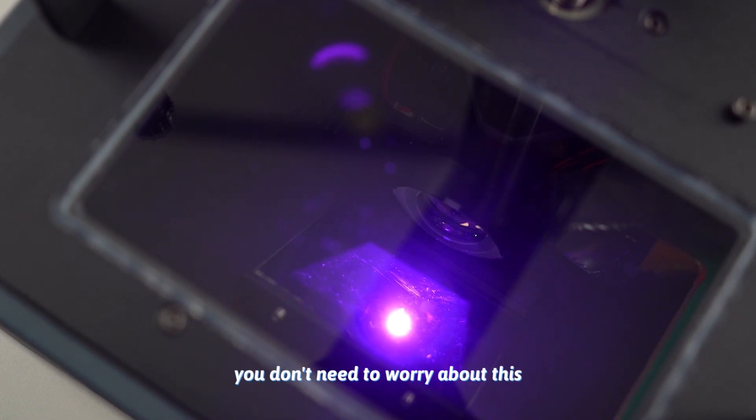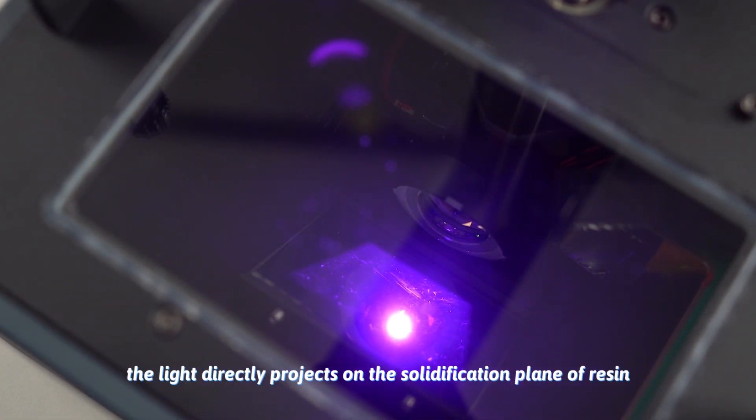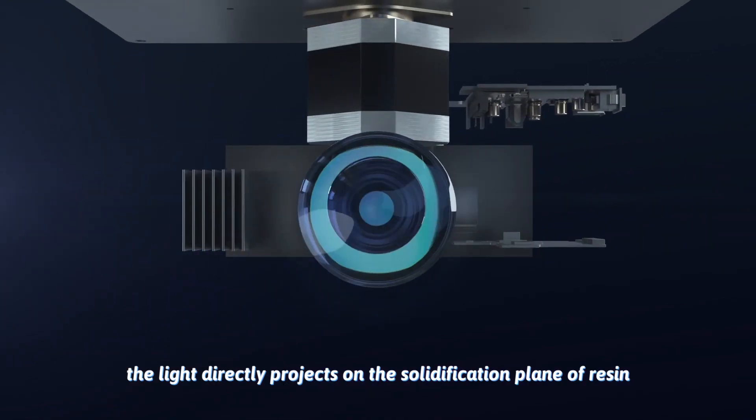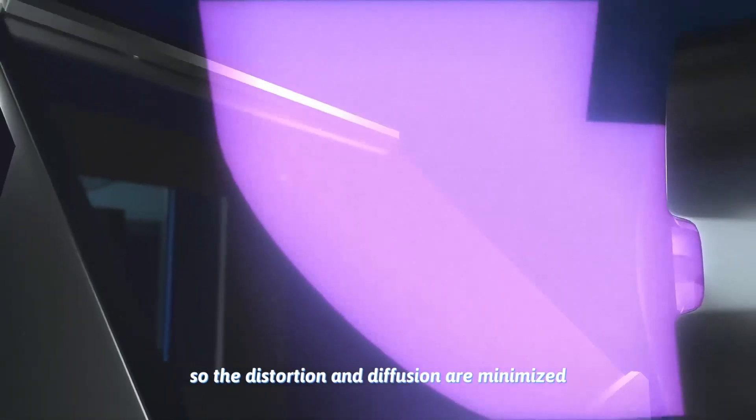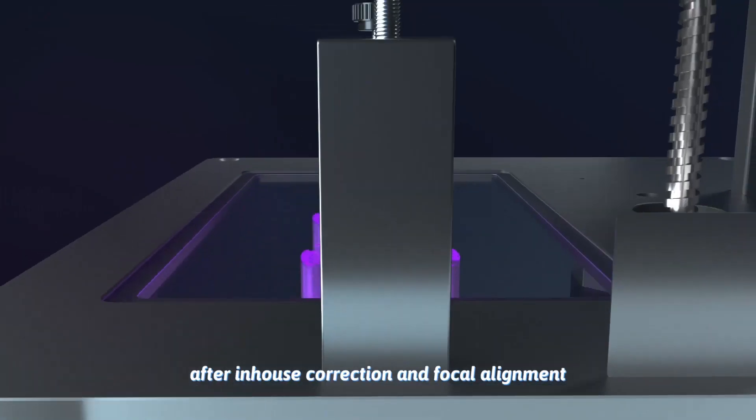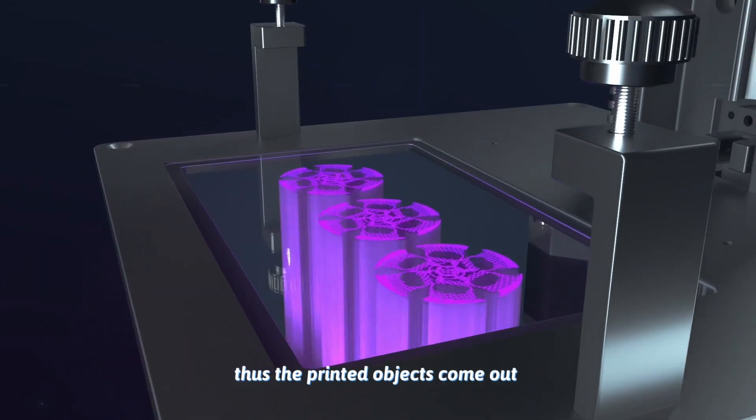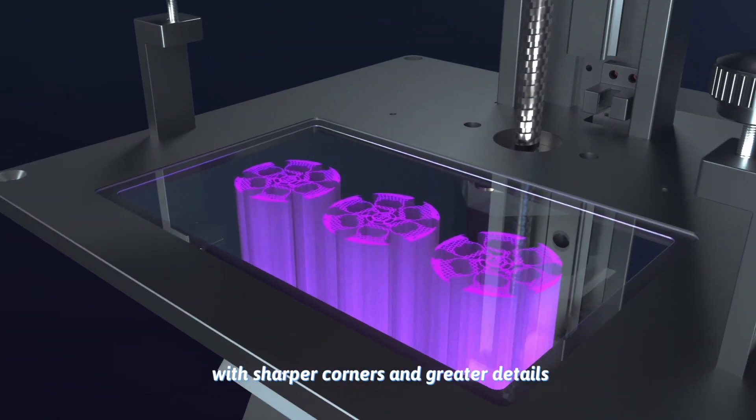But for DLP printers, you don't need to worry about this. The light directly projects on the solidification plane of resin, so the distortion and diffusion are minimized after in-house correction and focal alignment. Thus the printed objects come out with sharper corners and greater details.